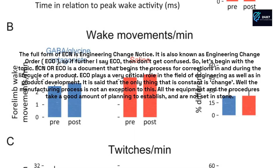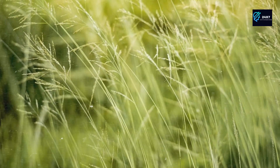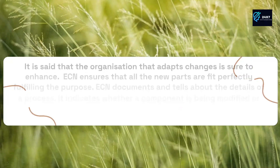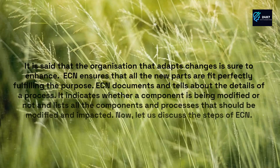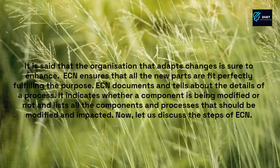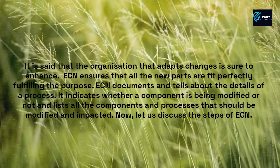It is said that the only thing that is constant is change, and the manufacturing process is not an exception to this. All the equipment and the procedures take a good amount of planning to establish and are not set in stone. It is said that the organization that adapts changes is sure to enhance. ECN ensures that all the new parts fit perfectly, fulfilling the purpose. ECN documents and tells about the details of a process. It indicates whether a component is being modified or not and lists all the components and processes that should be modified and impacted.